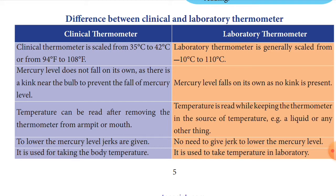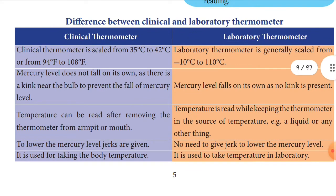Second point — in the clinical thermometer, the mercury level does not fall on its own. There is a kink near the bulb which prevents the mercury level from falling. In the laboratory thermometer, the mercury level falls on its own as no kink is present. So this type of laboratory thermometer must be handled very carefully.